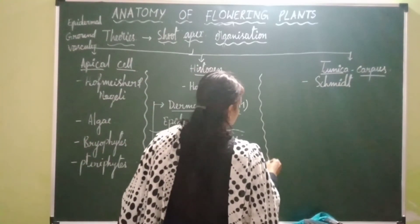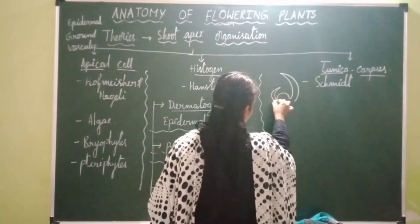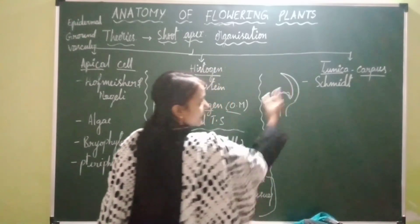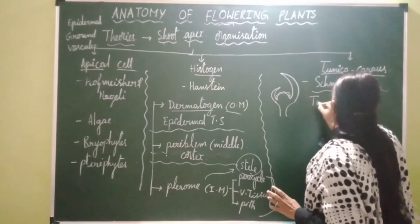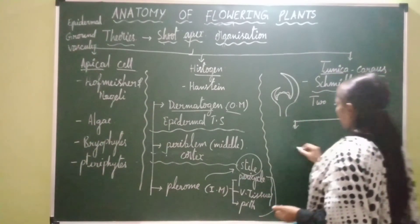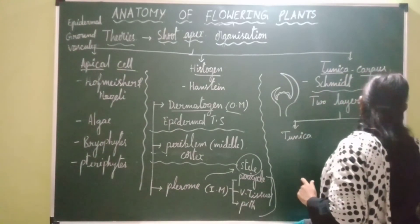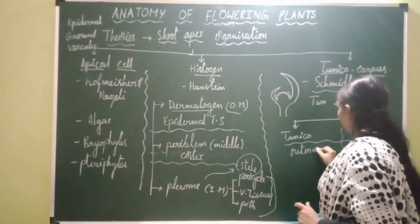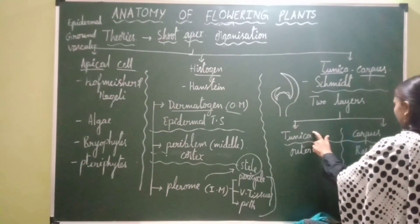According to tunica corpus theory, the shoot apex consists of two layers: tunica and corpus. The outermost layer of the shoot apex is the tunica — generally a single layer, but it can be multi-layered. All the remaining layers present in the shoot apex represent the corpus.